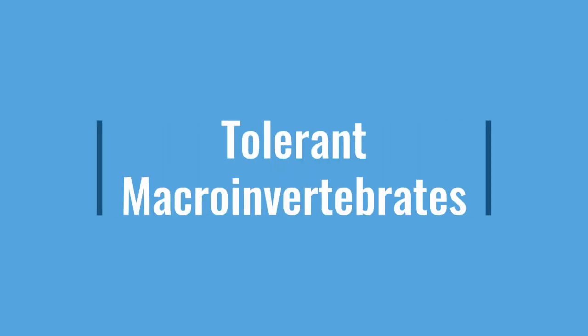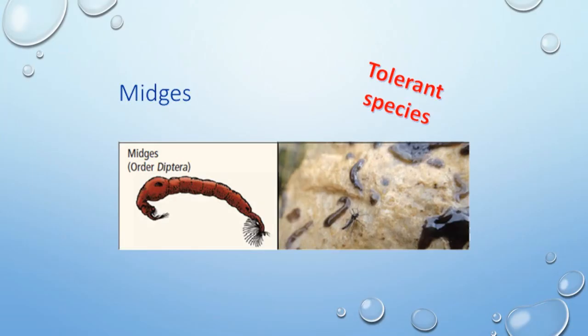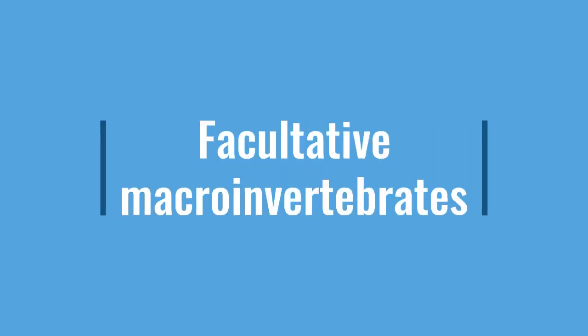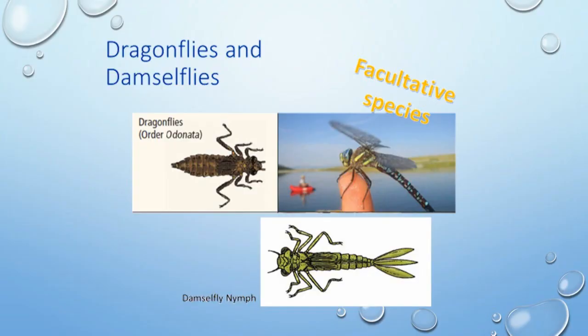Macroinvertebrates that can thrive in polluted conditions are called tolerant organisms. Examples of tolerant species include midges and rat-tailed maggots. Facultative macroinvertebrates prefer good stream quality but can survive in polluted conditions. Examples of facultative species include dragonflies and damselflies.